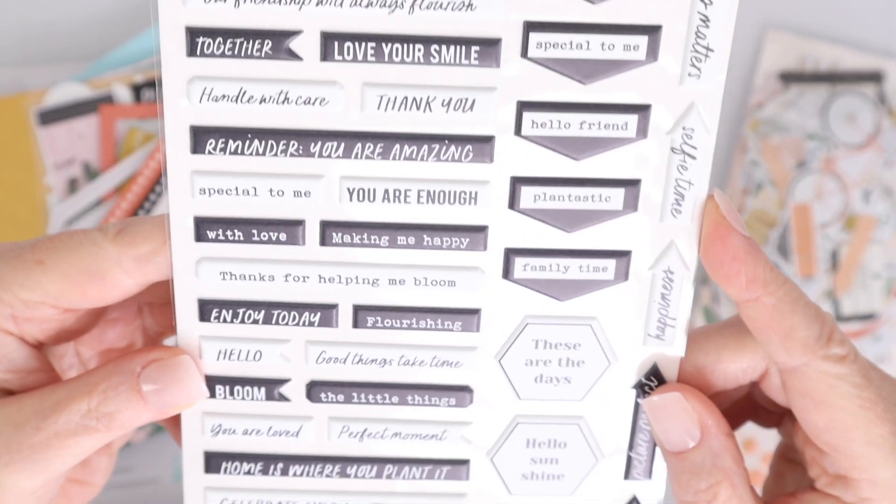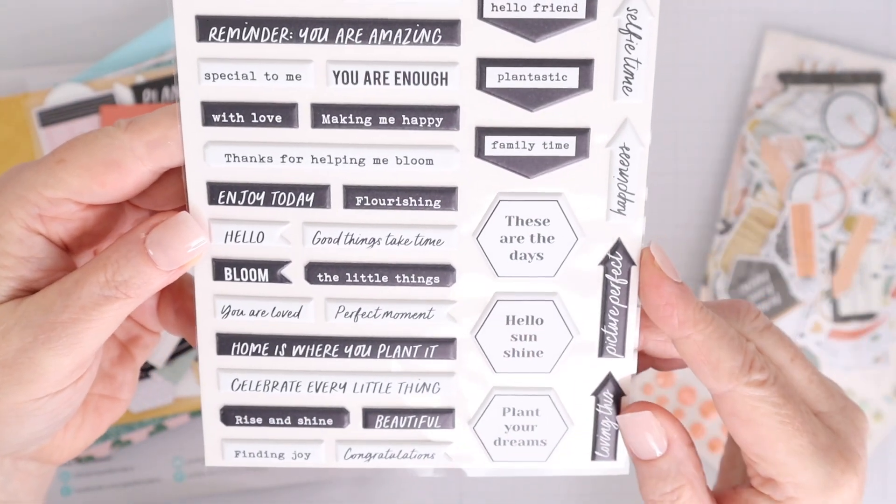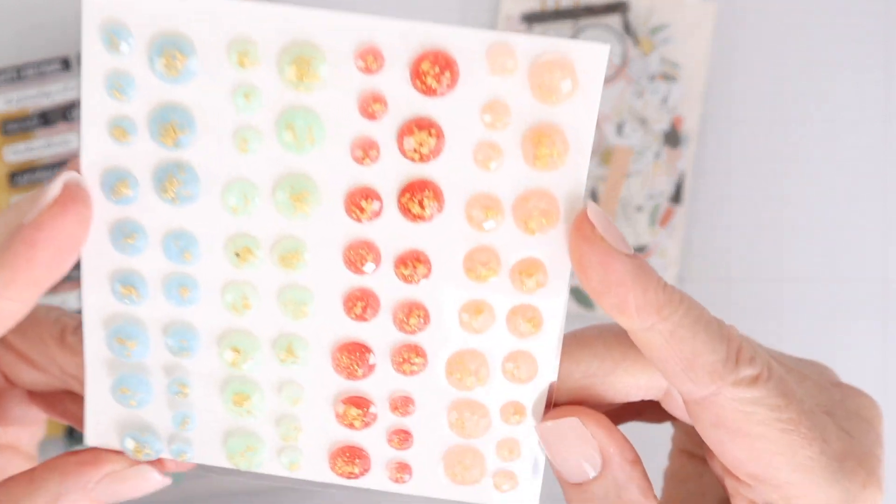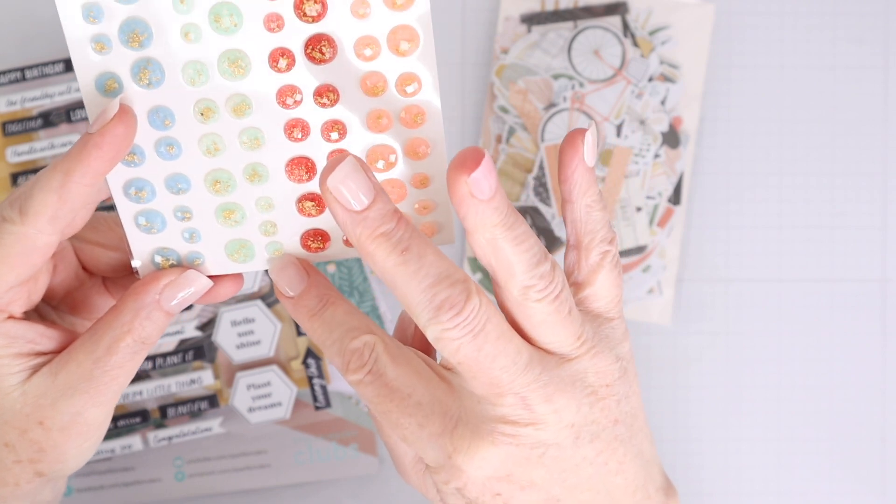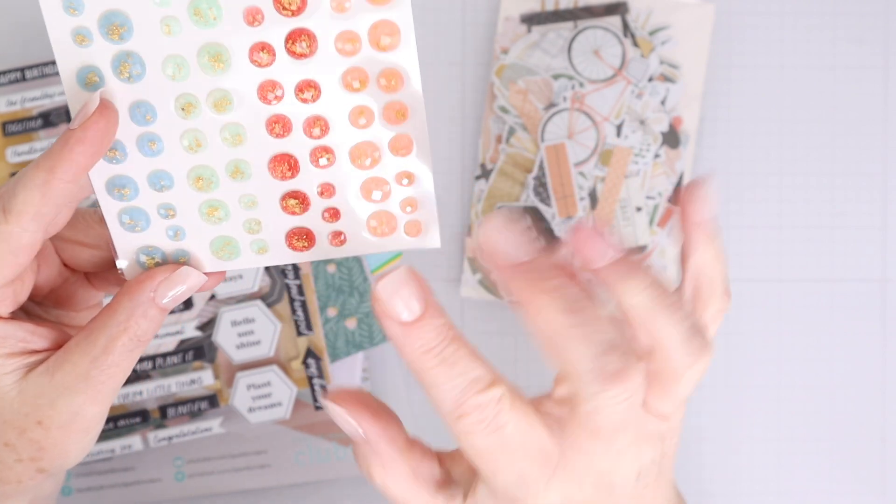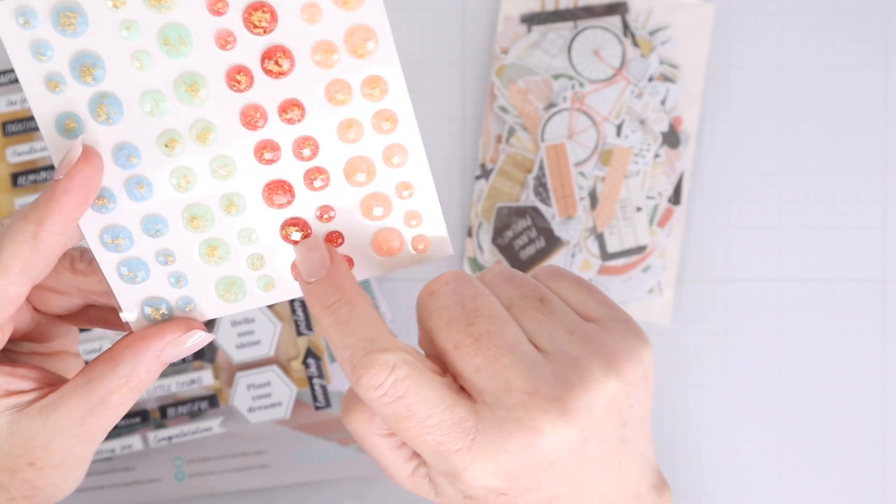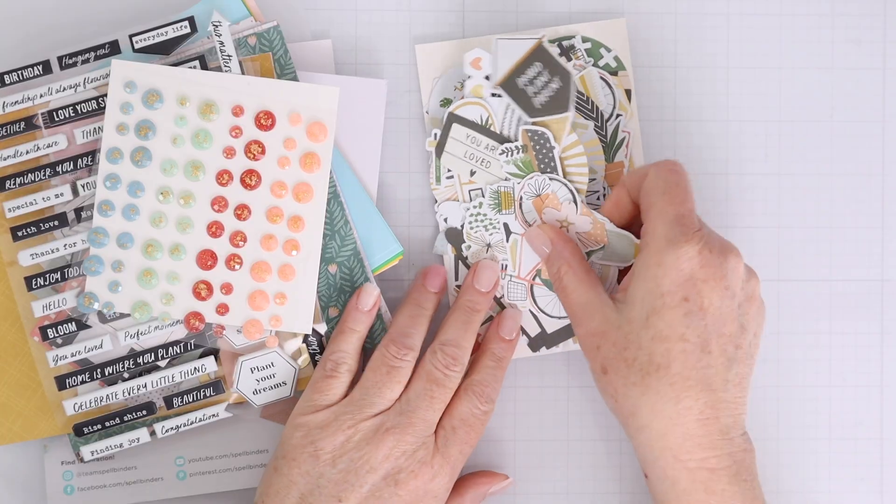There's also puffy stickers. Tons of sentiments on the puffy stickers this month. Everything from Hello Sunshine to Happy Birthday. And I love these gems. They come in four different colors. Each color has three different sizes. And they have this beautiful gold leafing that's added to the top. It does not scratch off. It's underneath the acrylic, but it just adds another element of interest and shine.